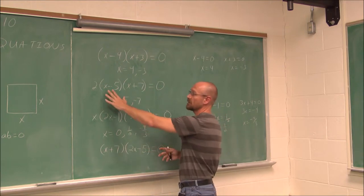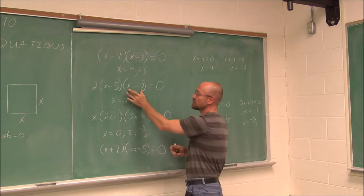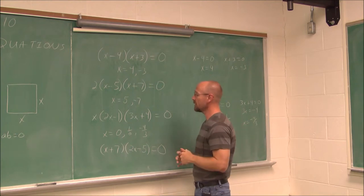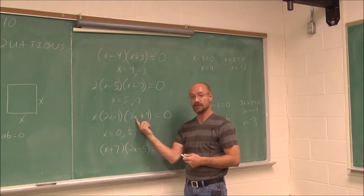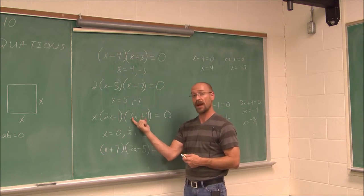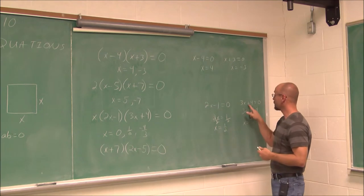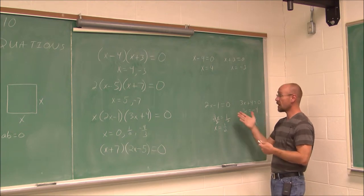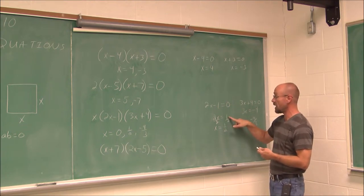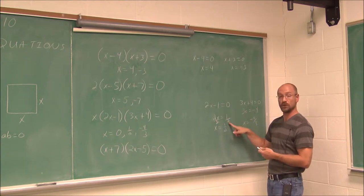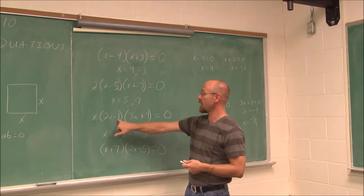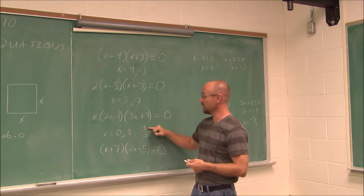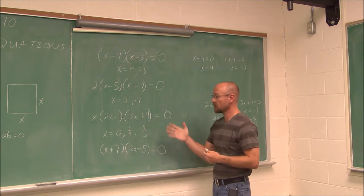I just want to go back and look. When they have coefficients, you can write it out and solve it, or you can use a shortcut: just like the root was the opposite of the constant, with coefficients it's going to be the opposite of that constant over the coefficient. I subtracted 4 and divided by 3, giving negative 4 thirds. The opposite of negative 1 is positive 1, divided by the coefficient 2, gives positive 1 over 2, or 1 half. So a quick way to get the root is: the opposite of this over that.